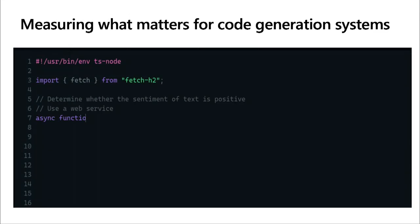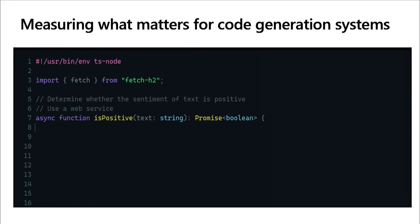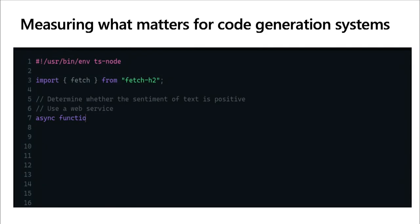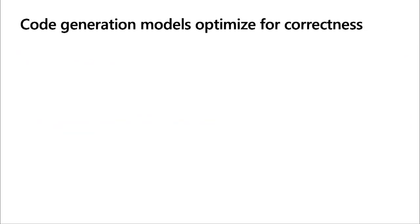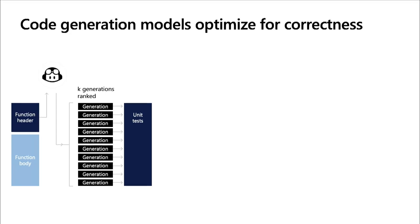On my team we wanted to figure out what measures matter for code generation systems. Using a foundation model like GPT-3 fine-tuned on open-source libraries, the system takes a natural language prompt and produces a full function — super powerful. Currently the state of the art measures correctness: you split a function into a header and body, pass it to the code generation system, get K generations, run them through unit tests, and see how many pass or fail.